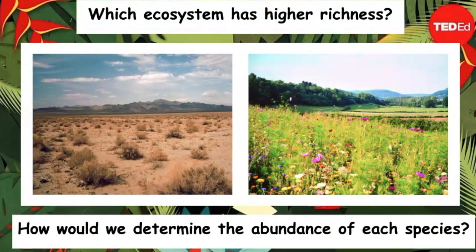Which of these ecosystems do you think has a higher richness? How could we determine the abundance? If you're thinking we'd have to count all the plants, you'd be close to right.